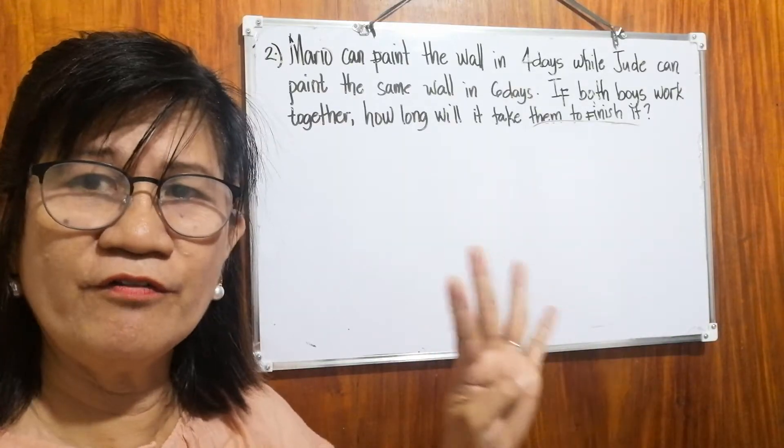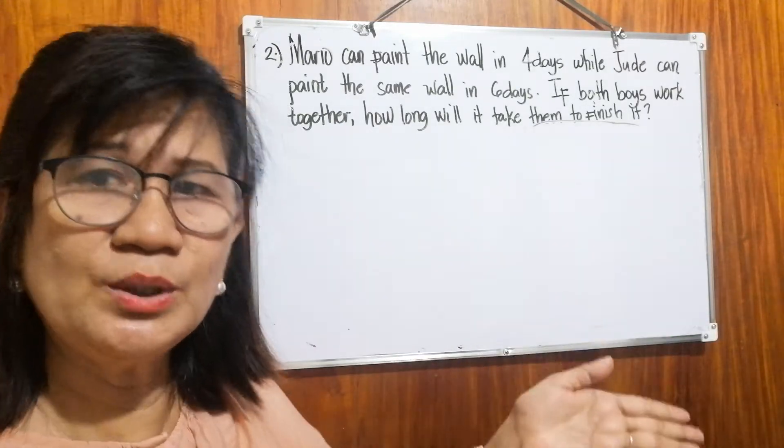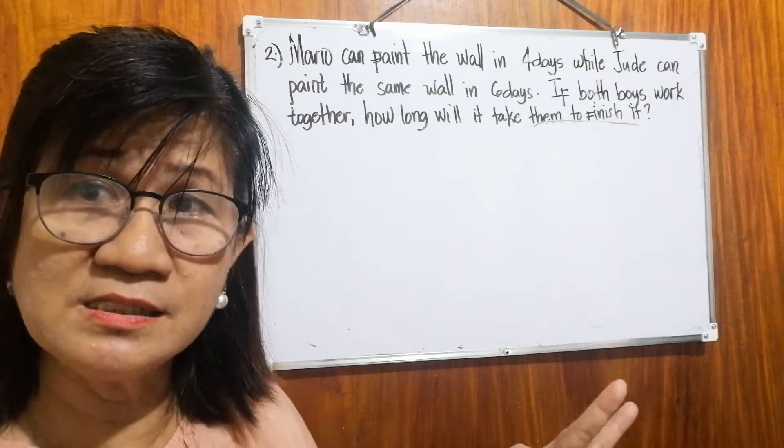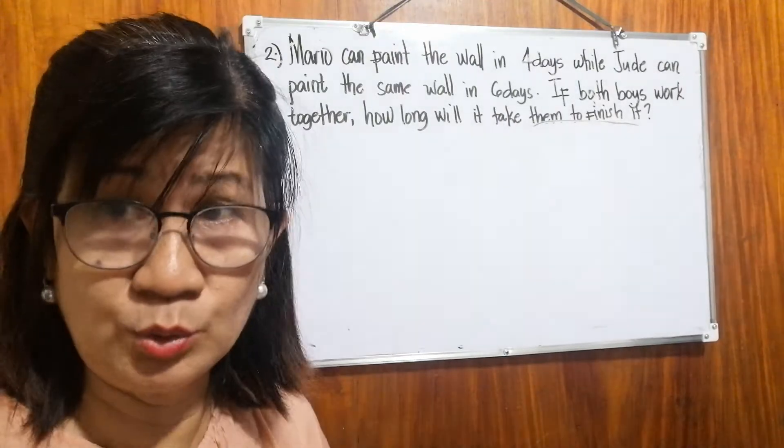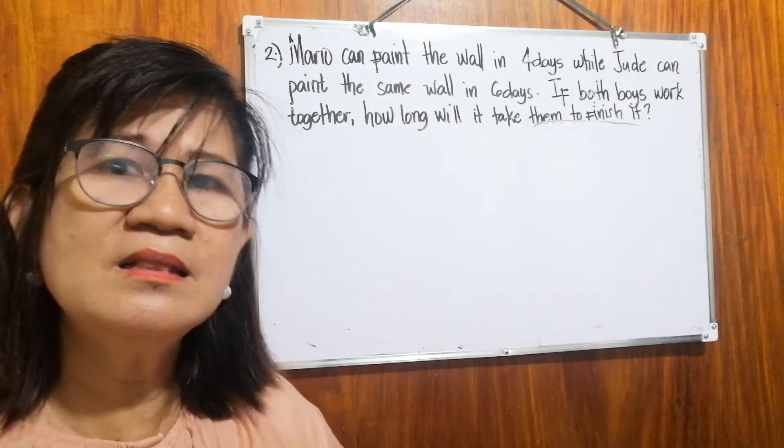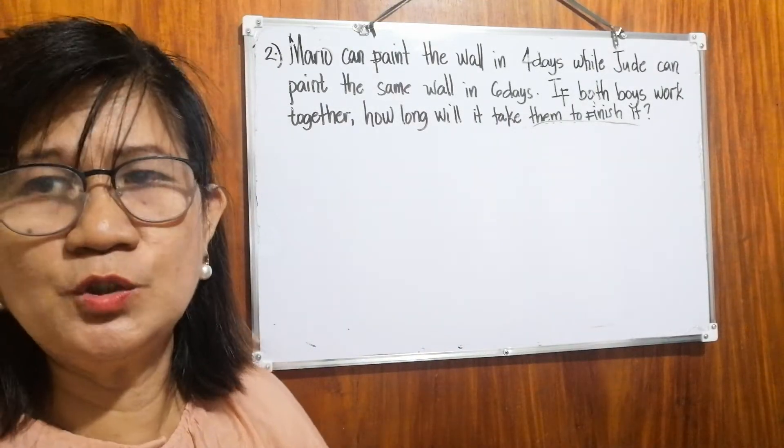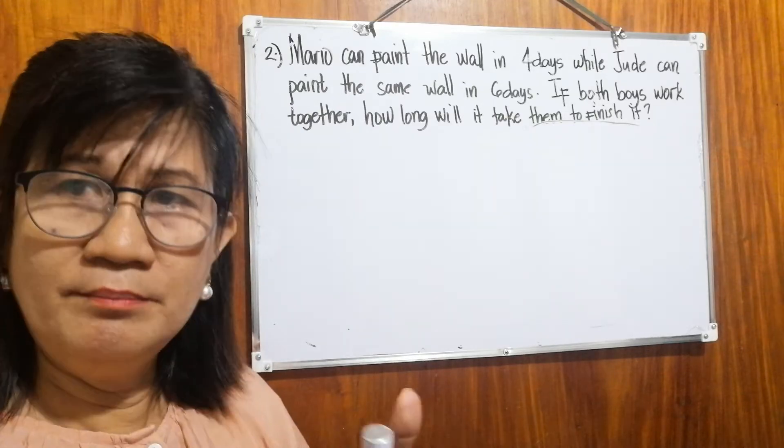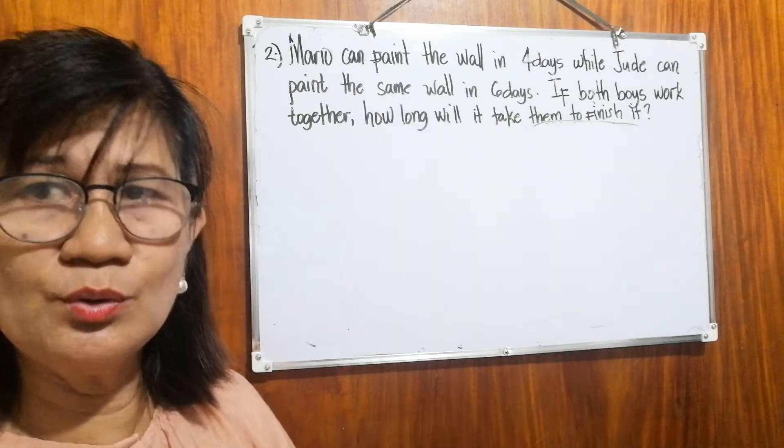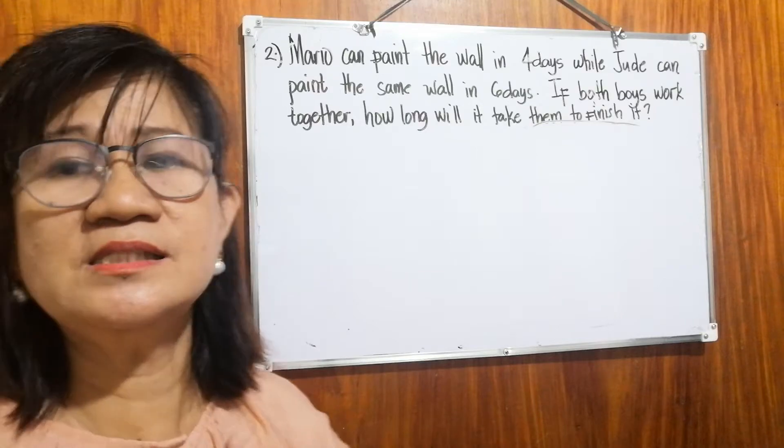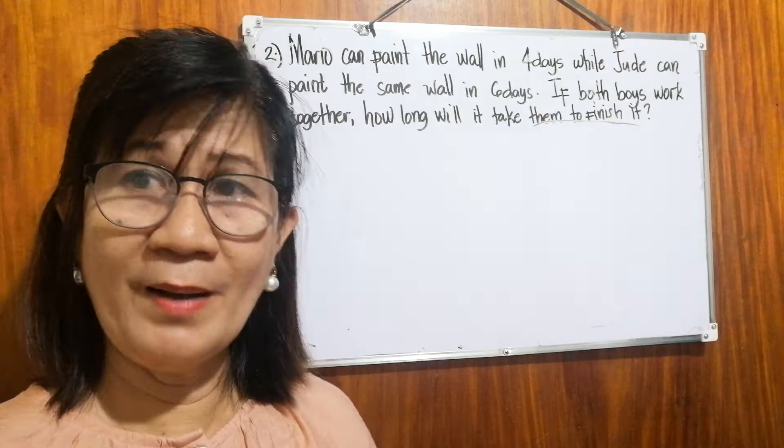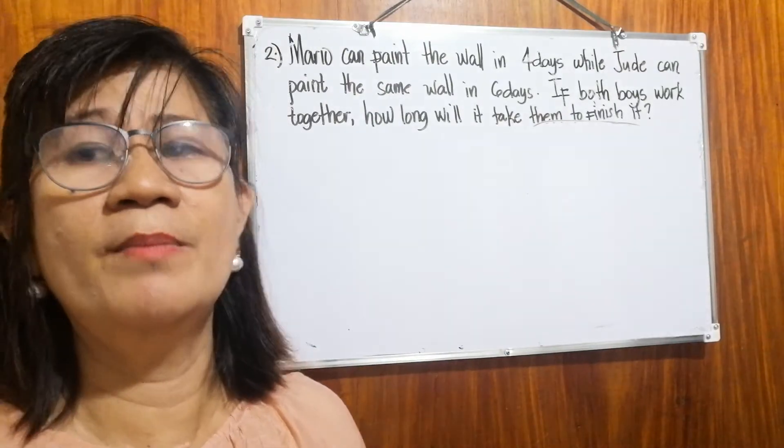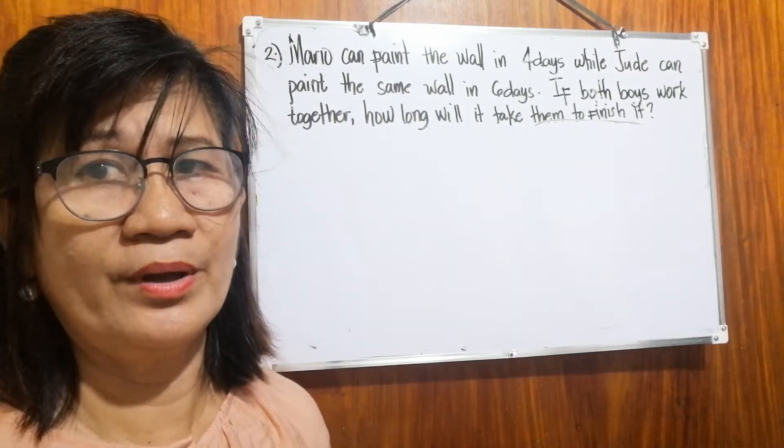If Mario alone works, painting, it will last for four days. If Jude alone, it will last for six days. The question is, how about if the two of them work together? The speed of Mario plus the speed of Jude, working together. So what do we expect? What can we expect? Will it still last six days or will it be less than four days?